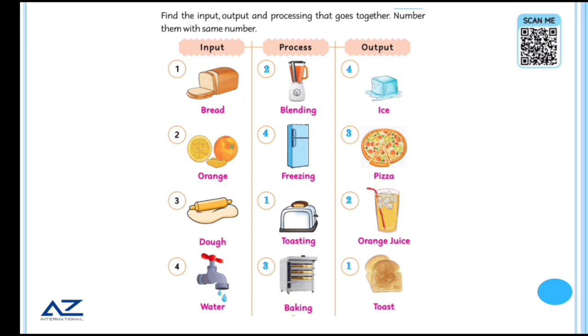Find the input, output and processing that goes together. Number them with same number. Like you have input, you have given the first bread when number 1. Now you will see the next process of bread, which we will give again number 1. Then we will give it output after the toasting of bread, we will give it number 1 because bread will be toast and then you will have a toast bread. So we will give it 1, 1, 1.